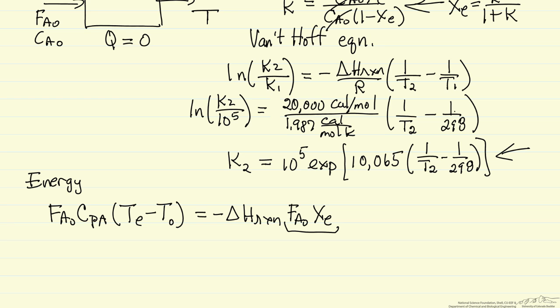This term here is moles of A reacting per time. Of course FA0 is going to cancel out of this equation and I'm going to end up with the equation for the equilibrium conversion in terms of the heat capacity of A, CPA times (TE minus T0), the zero is my feed temperature, and then minus the heat of reaction.